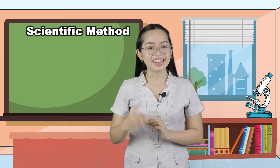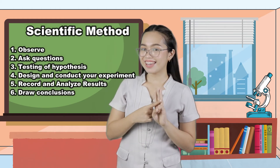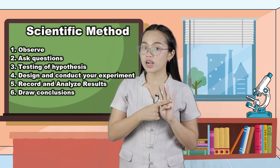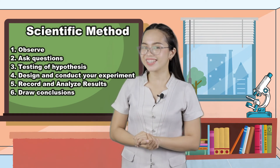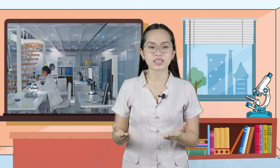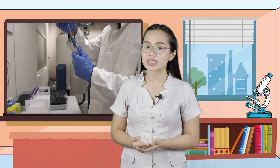I hope you had a great time learning the scientific method. Remember the basic steps: observe, ask questions, test hypothesis, design and conduct your experiment, record and analyze results, and draw conclusions. Scientists and engineers solve problems using a systematic process of empirical investigation known as the scientific method. The scientific method is the key to unlocking bodies of knowledge by helping researchers organize their thoughts and procedures and by making them confident in findings generated from experiments.